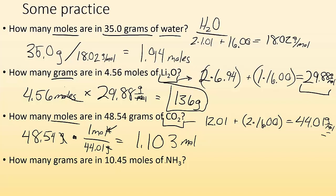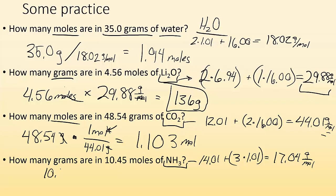How many grams are in 10.45 moles of NH3? Find the molar mass of NH3: nitrogen is 14.01 plus three hydrogens at 3 times 1.01, giving a molar mass of 17.04 grams per mole. So 10.045 moles times 17.04 grams per mole — moles cancel out — and I end up with 178.1 grams as my final answer.